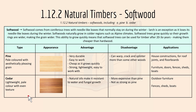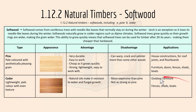Cedar is lightweight and pale-colored with an even texture. The advantage is that its natural oils make it resistant to water and fungal growth. The disadvantage is that it's more expensive than pine and not as strong as pine. Applications include outdoor furniture, fences, and boats.